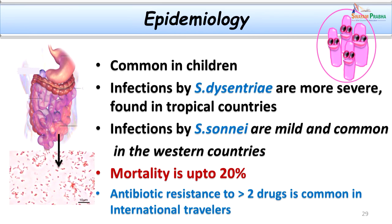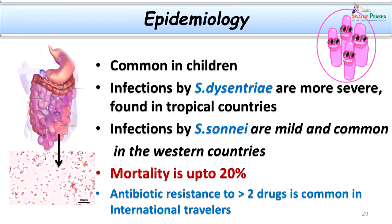Let us now study some epidemiological points. Shigellosis is common in children and frequent in daycare centers, nursing homes, crowded areas, and schools. Infections by Shigella dysenteriae are much more severe compared to those by Shigella flexneri or Shigella sonnei. Shigella dysenteriae is more common in tropical countries, while Western countries see more Shigella sonnei, which causes a milder disease. Mortality in shigellosis can reach up to 20% in untreated cases due to toxemia and complications.